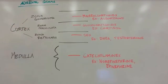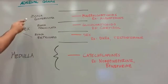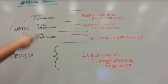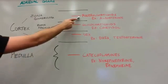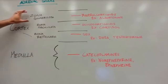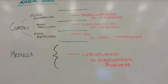Now let's take a look at these three layers of the cortex. The first layer, the zona glomerulosa, is going to create mineralocorticoids. An example of that is aldosterone. The outer layer is pretty much controlled by the renin-angiotensin system.